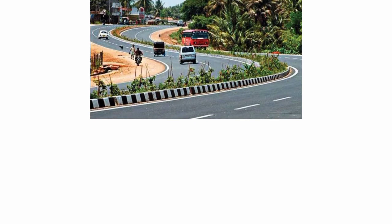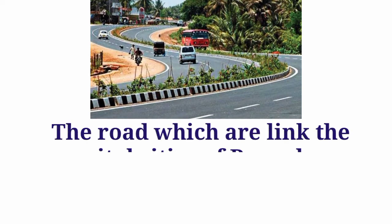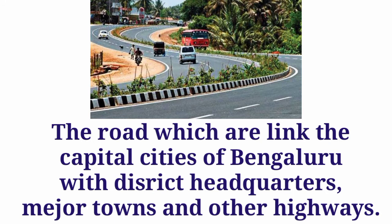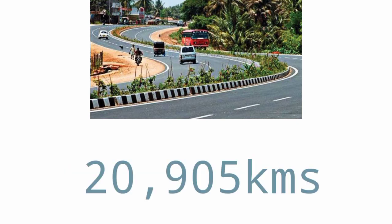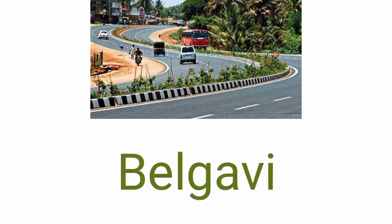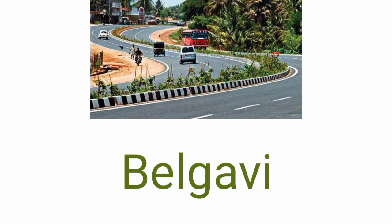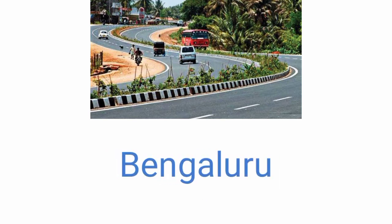The second kind of road is the state highway. The roads which link the capital city of Bengaluru, district headquarters, major towns, and other highways are called state highways. Their construction and maintenance rest with the state government. Karnataka has 20,905 kilometers of state highways. Belagavi has the longest state highway, while Bengaluru has the least.